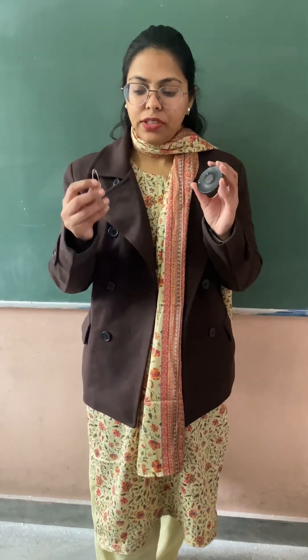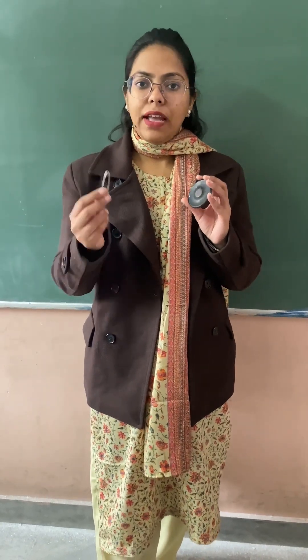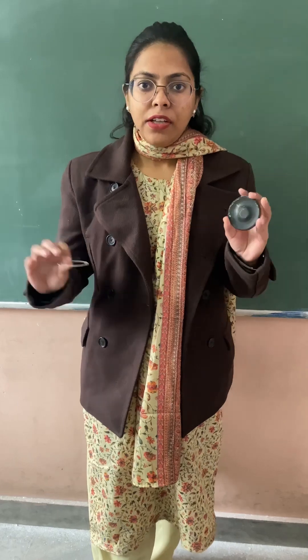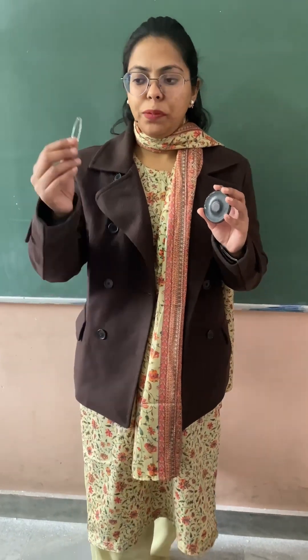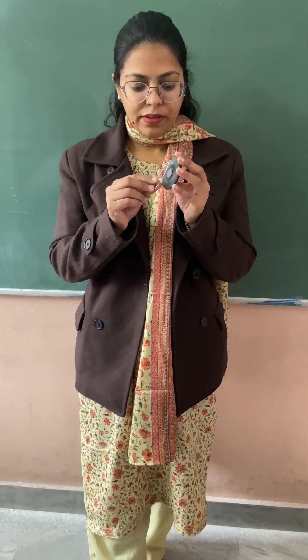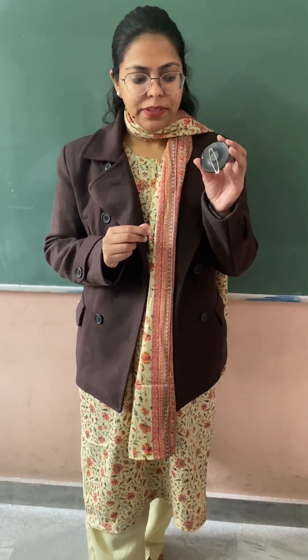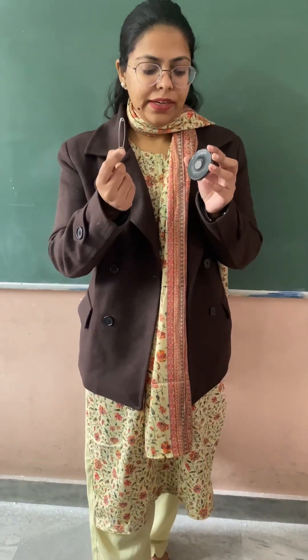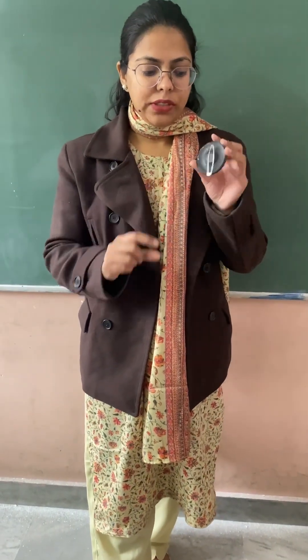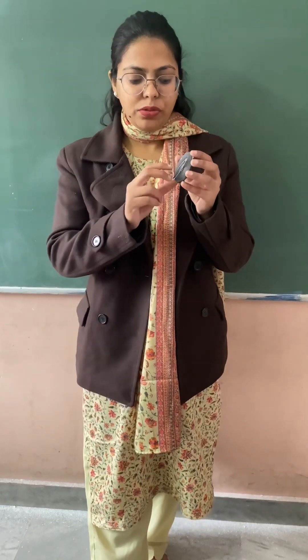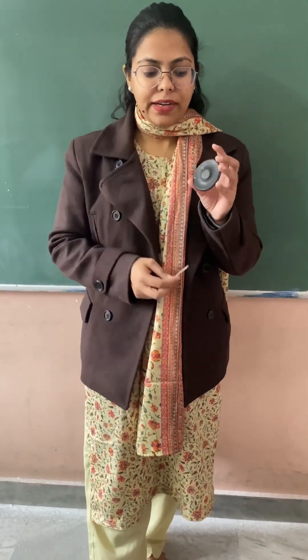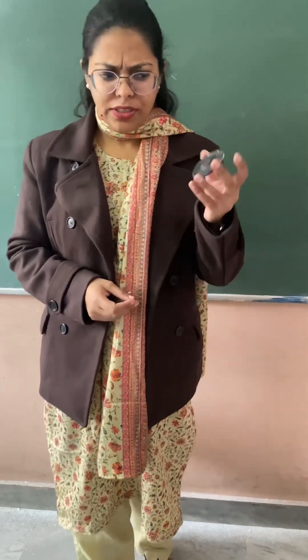As you can see, in my hand there are two things. This is a safety pin and this is an object. What I am going to do is just bring this safety pin closer to this object. You can see that this safety pin gets attracted towards this device. Do you know why this safety pin gets attracted towards this device? What is there in this device?